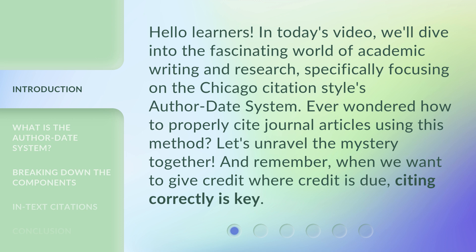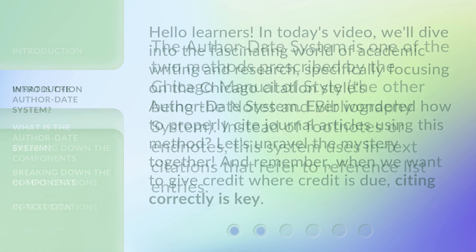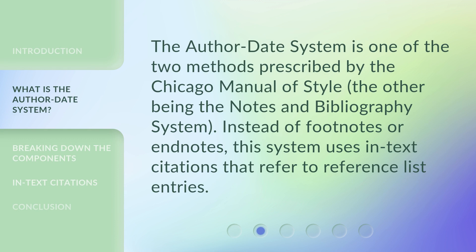Remember, when we want to give credit where credit is due, citing correctly is key. The Author-Date System is one of the two methods prescribed by the Chicago Manual of Style, the other being the Notes and Bibliography System. Instead of footnotes or endnotes, this system uses in-text citations that refer to reference list entries.